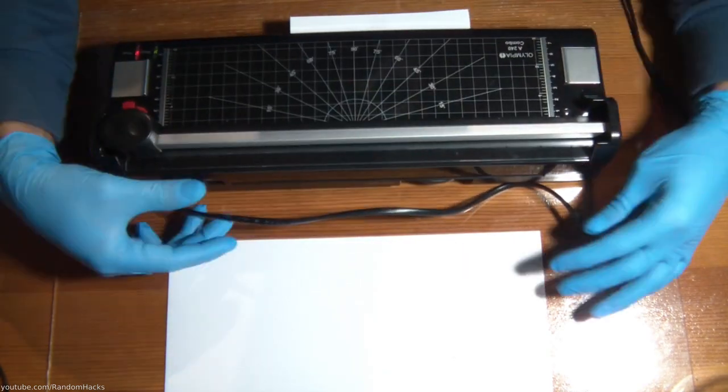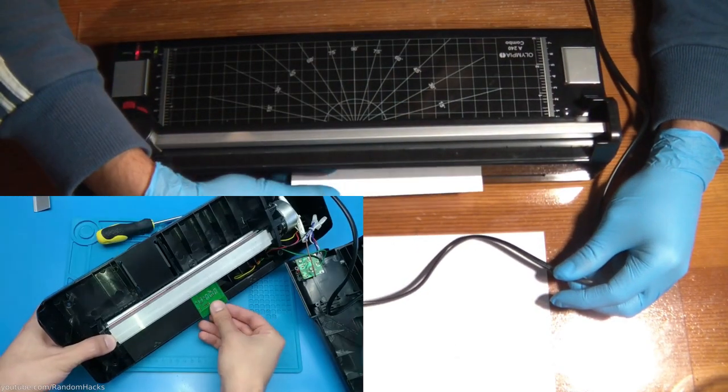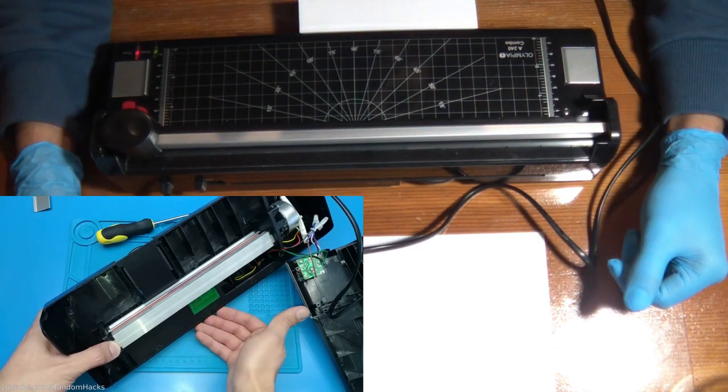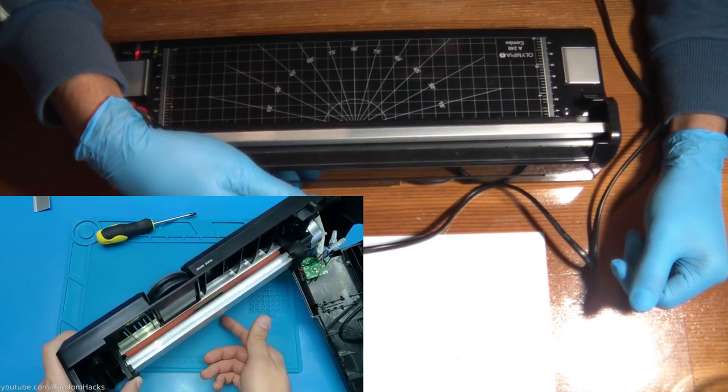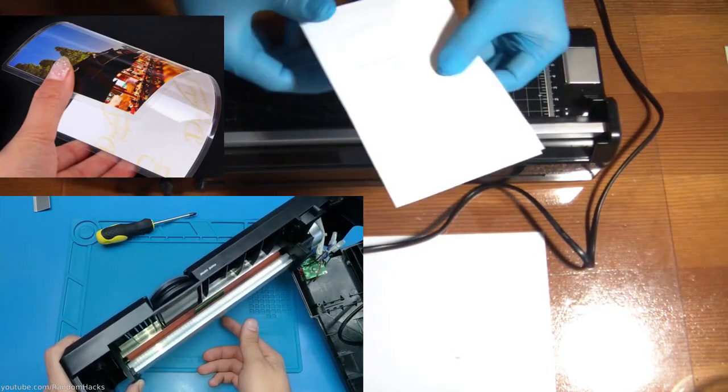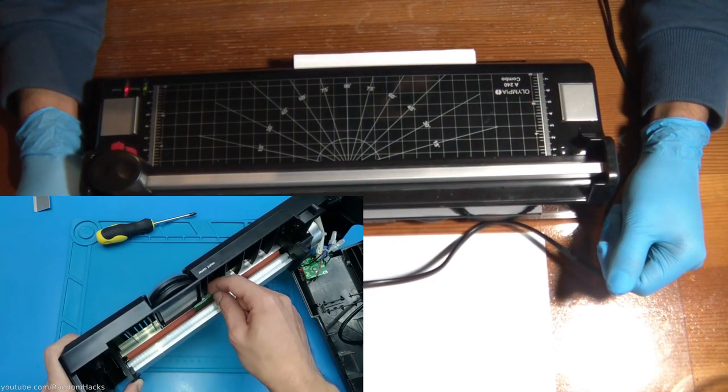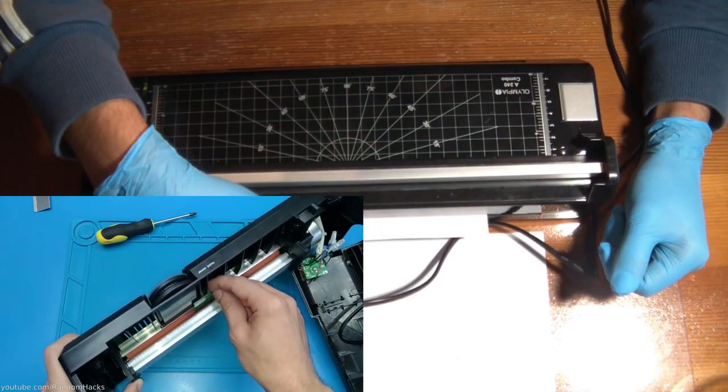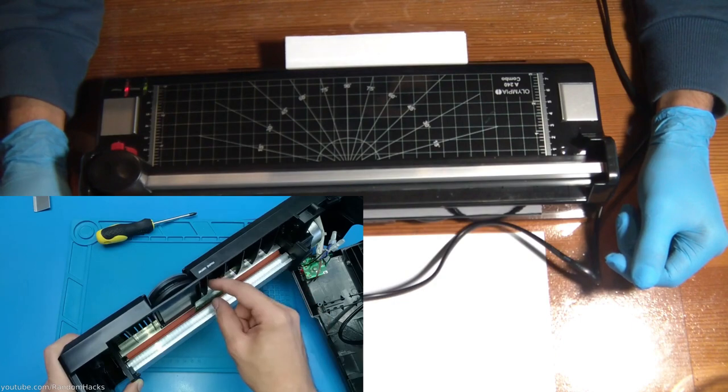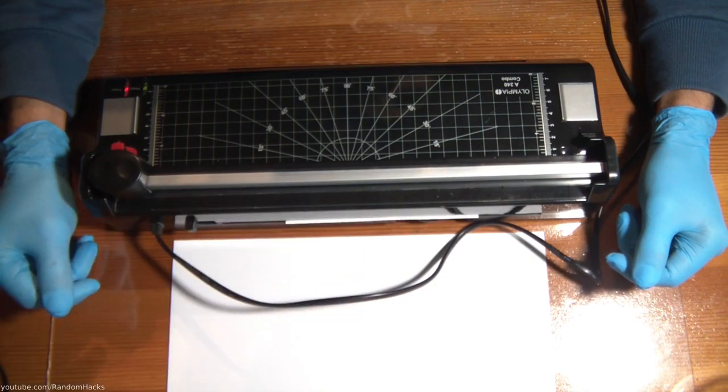And passed it through a cheap heated laminator. A laminator is a machine that has two silicon cylinders inside that are heated and is used to laminate paper inside a plastic pouch. In this case I am using it to force the dry film to stick to the board. If you don't have a laminator, you can use a clothes iron at low temperature.